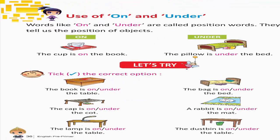Use of on and under. Words like on and under are called position words. They tell us the position of objects. On — The cup is on the book. Under — The pillow is under the bed. Let's try — Tick the correct option.